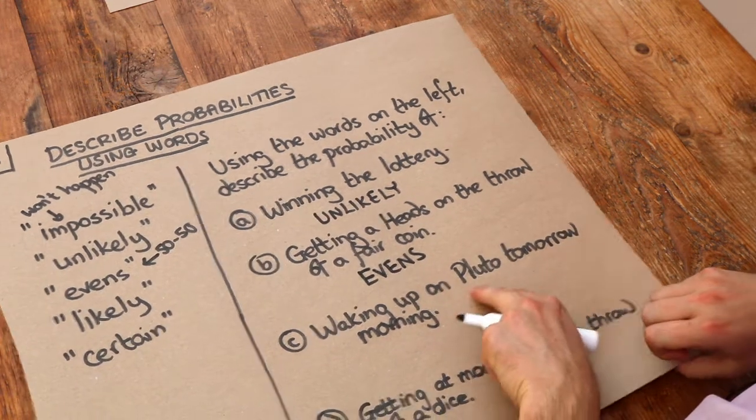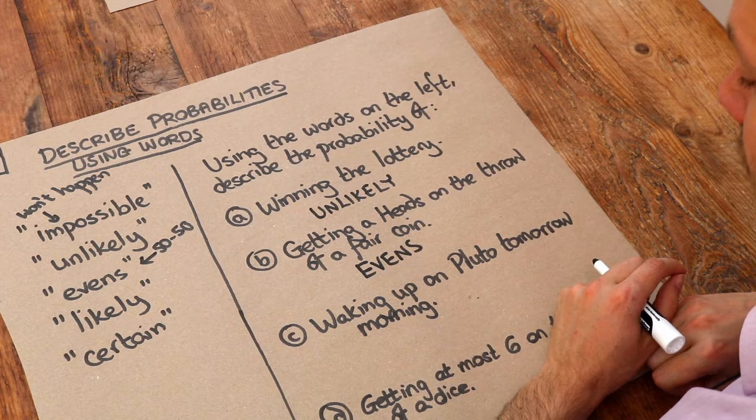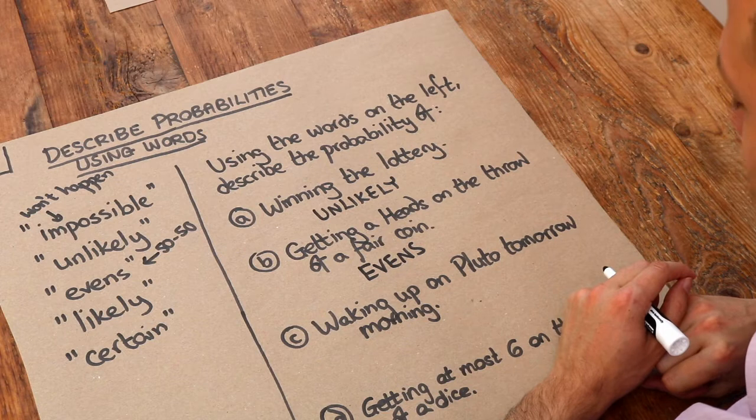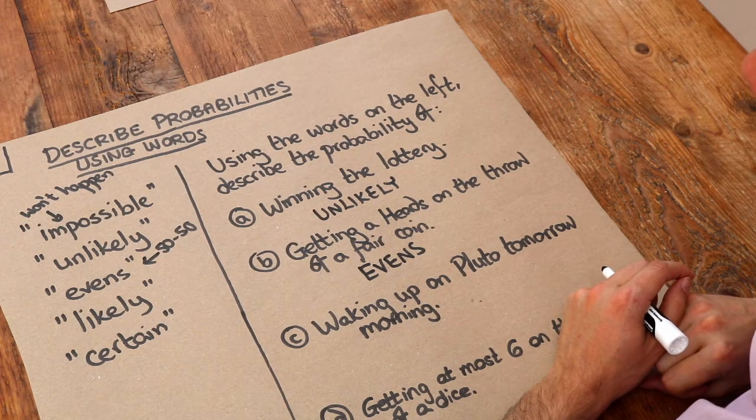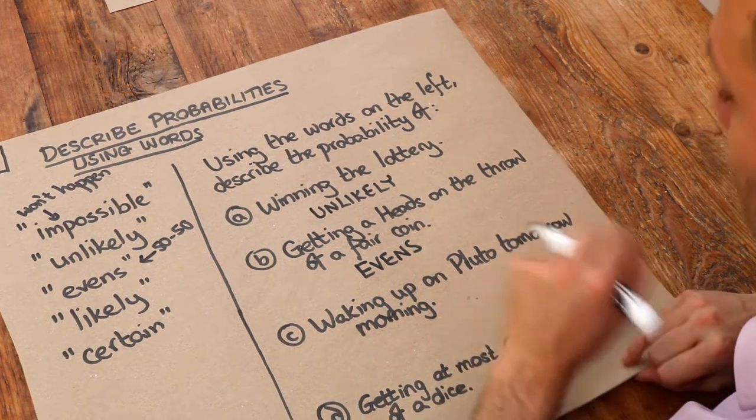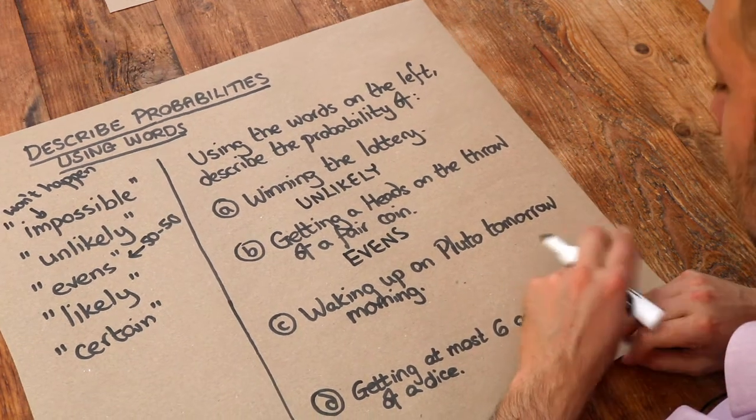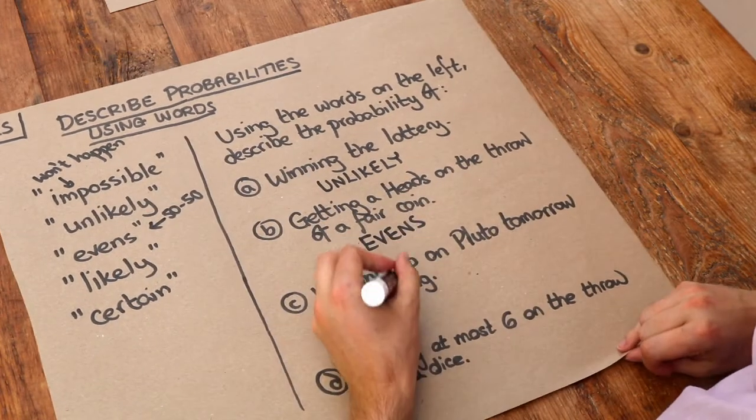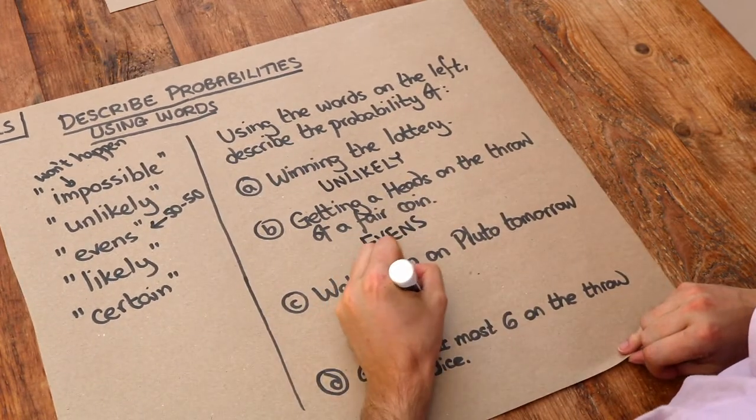What about waking up on Pluto tomorrow morning? Now I purposely picked a planet which was super far away because there is a slim possibility, for example, that there might be a spaceship fast enough to get you to Mars by tomorrow, but Pluto, definitely not. You can't go that fast. So that's absolutely impossible. That's not going to happen. So that one we say is impossible.